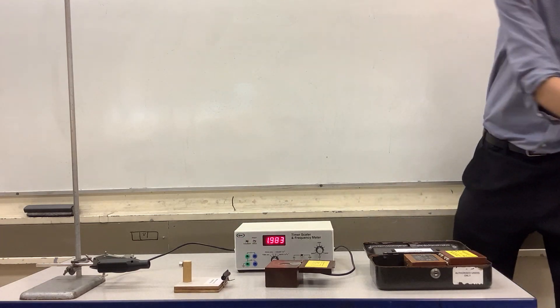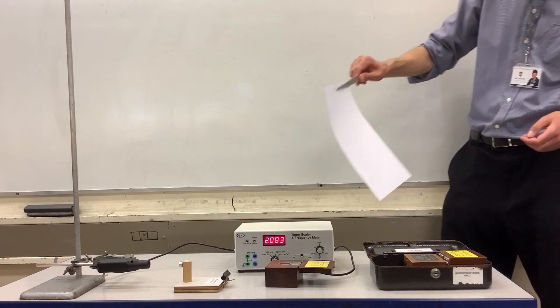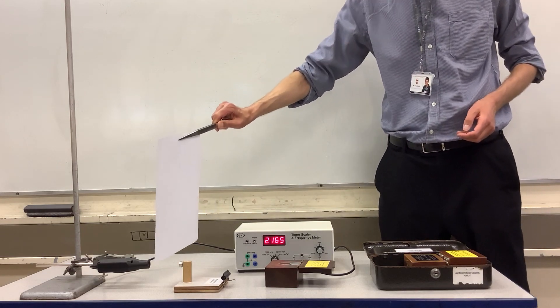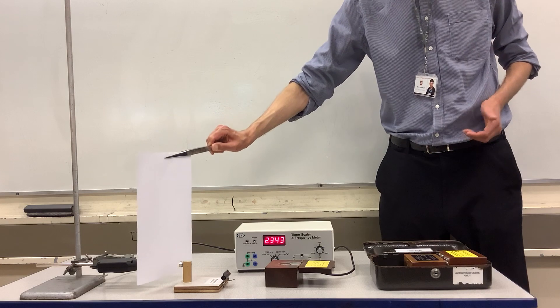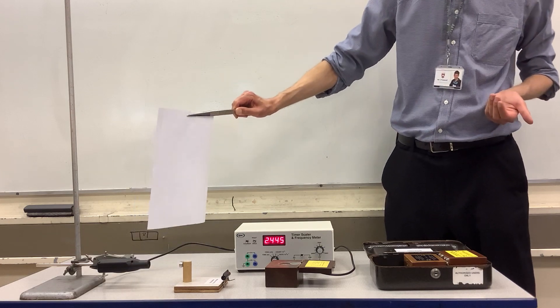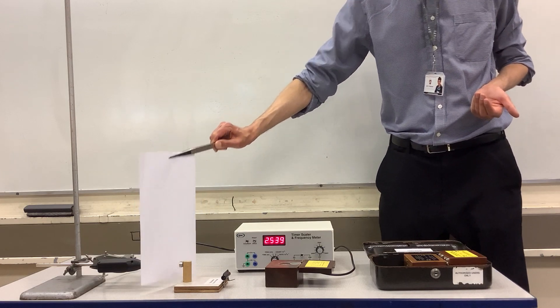So let's put it a little bit closer and see what the effect is of putting a piece of paper in. Remember, paper stopped alpha radiation, but the paper barely has any effect, so the paper is not absorbing the beta radiation.